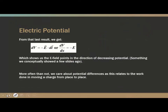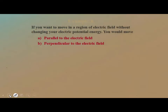The electric field equals the rate of change of potential over distance. Because of the negative sign, the electric field points in the direction of decreasing potential. We care about potential differences because they tell us how much work is required to move a charge from place to place.